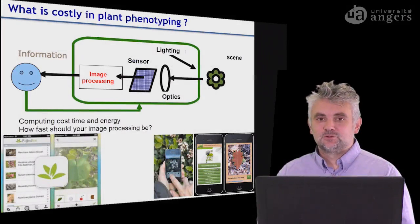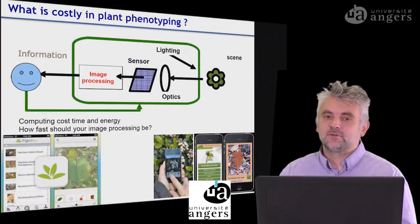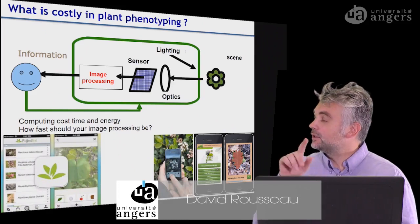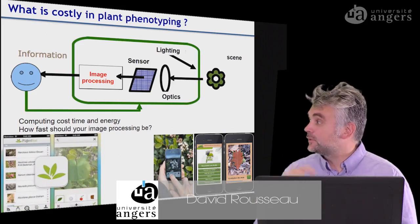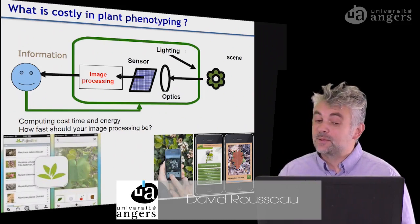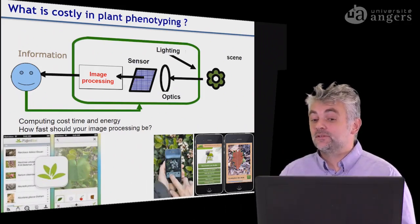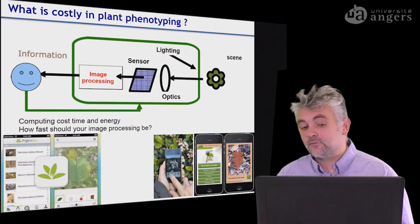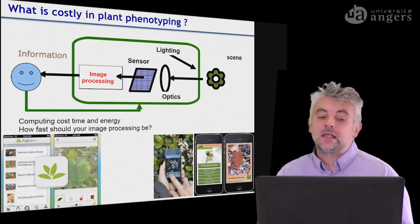Hi everyone, thank you for being back on this series of videos. We are currently monitoring the impact of the price of each individual choice in this computer vision pipeline. We have already processed the lighting, the scenes, the impact of optics on sensors, and now we have a discussion on image processing.